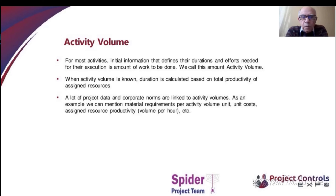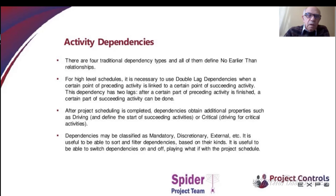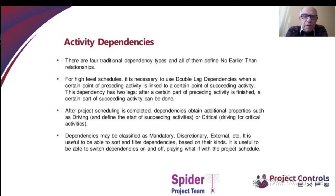A lot of project data and corporate norms are linked with volumes, like material requirements per unit of volume, unit cost, and productivity measured as volume per unit. Spider Project uses activity volumes as initial information and calculates everything else. Of course, there are also activity types that we call duration-based — you can enter duration directly — but for most activities, the initial information is the volume of work to be done.